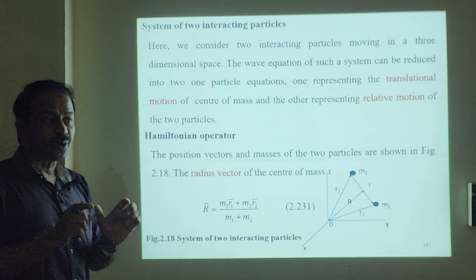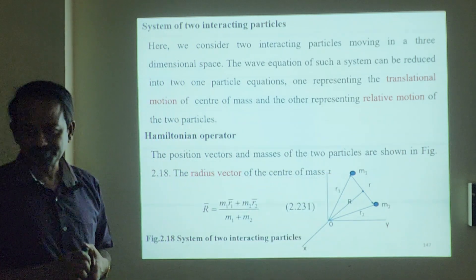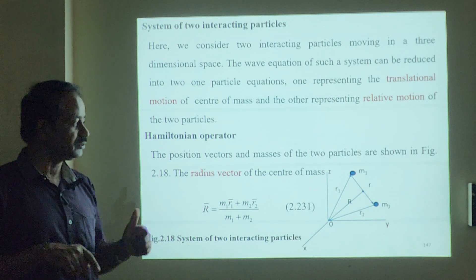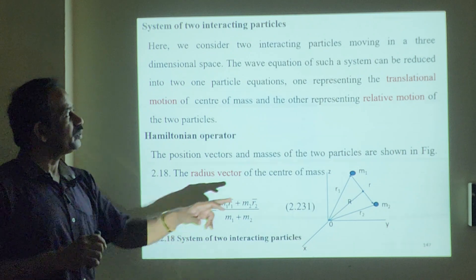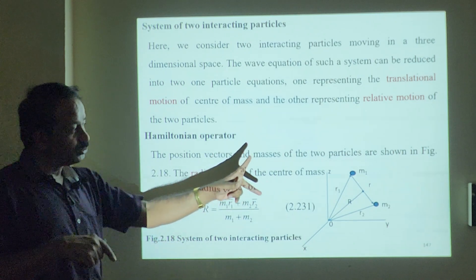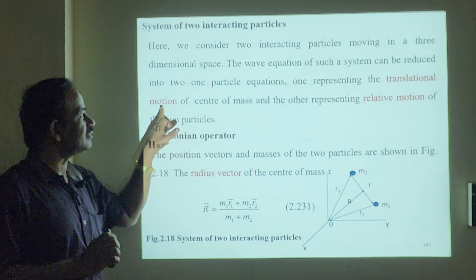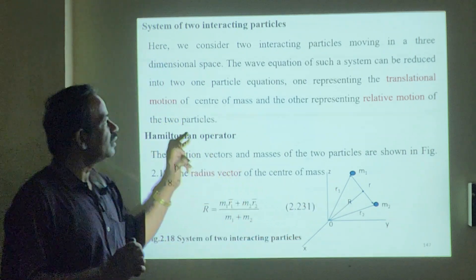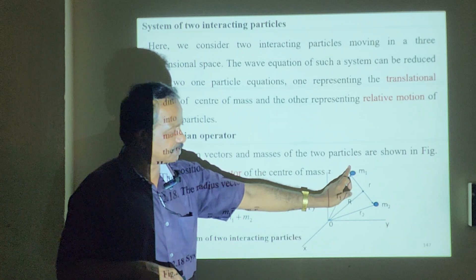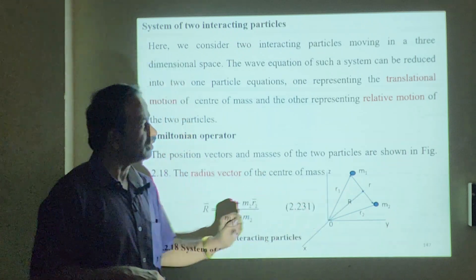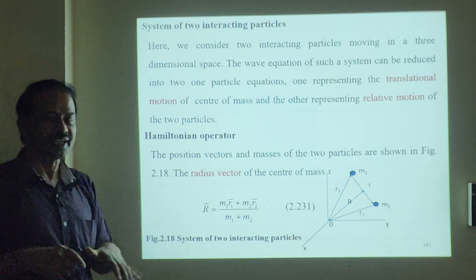Two interacting particles — how will they have their motion? We are going to solve the solution using the Schrödinger equation for these two interacting particles. We can consider the two interacting particles as one particle equation: one representing the translational motion above the center of mass, and another one representing the relative motion between the two particles.